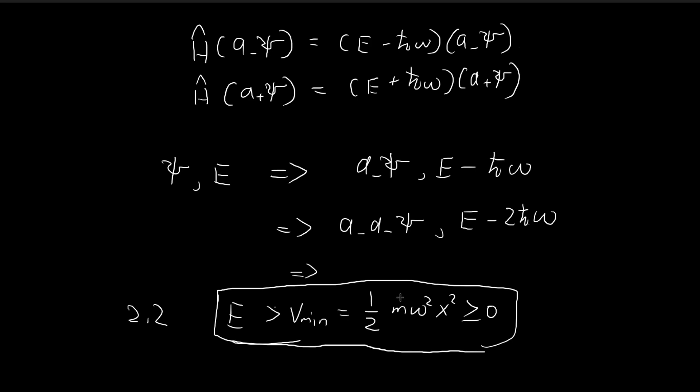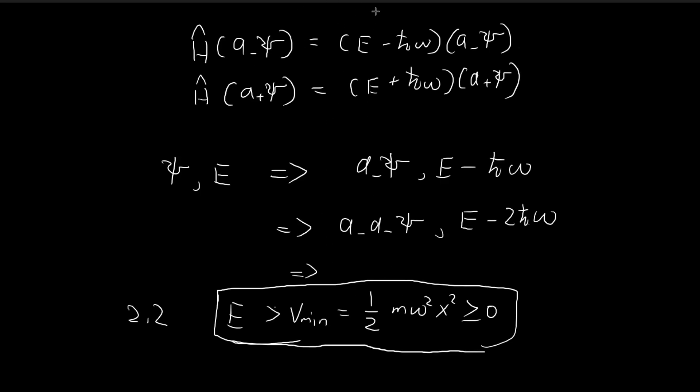In order to get around this problem, we can set up a certain condition to avoid this from happening. As before, we start off with ξ and energy E, and then we keep applying A⁻ to keep getting lower energy states. This is going to keep going until we reach a certain energy level, let's call it E₀, with corresponding function ξ₀.